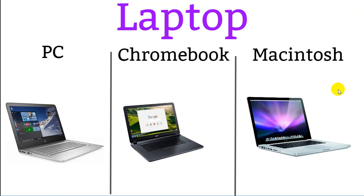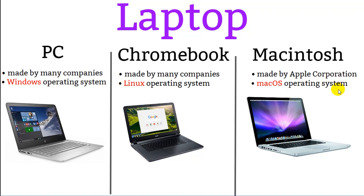Let's talk about laptops. There are three different kinds: the PC, the Chromebook, and Macintosh. PCs are made by many companies and run the Windows operating system. Chromebooks are made by many companies and they all run Linux — so if you've been using a Chromebook, you are an experienced Linux user! Macintosh has their own laptops running the Mac OS, and Macintosh laptops are only made by the Apple Corporation.